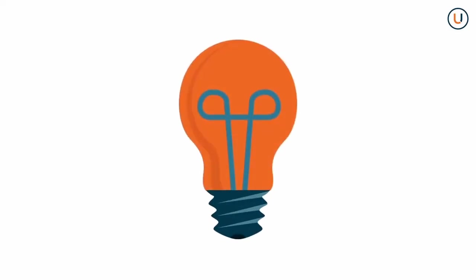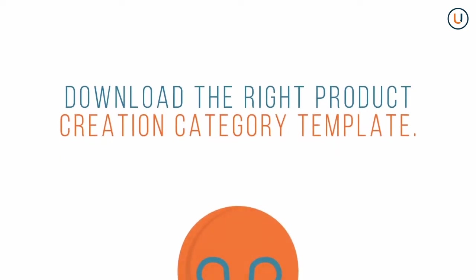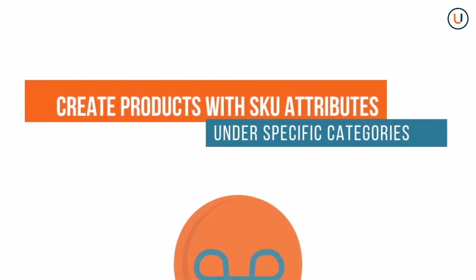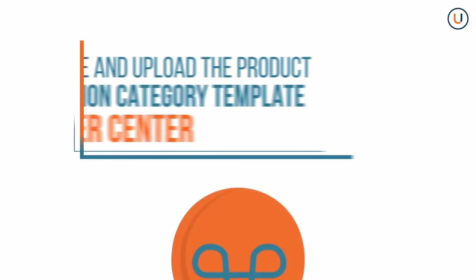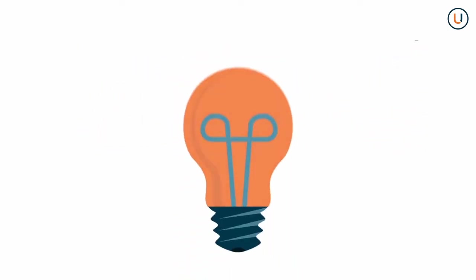At the end of this video, you should be able to do the following: download the right product creation category template, also known as the mass upload template, for your product; fill out all the mandatory attributes in the template; create products with SKU attributes under specific categories; and save the template in Excel format and upload it in Seller Center.